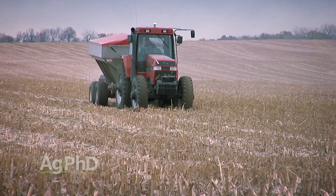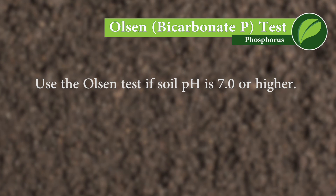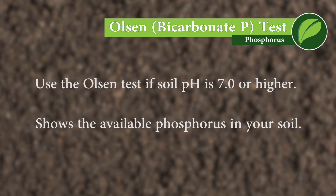In soil pH situations above 7.0, you want to look at the Olsen test, otherwise known as the bicarbonate P test. That will tell you available phosphorus — what's ready to go for your crop right away. In the lower pH, below 7, then we're going to look at both the Bray P1 and the Bray P2, so weak Bray and strong Bray.